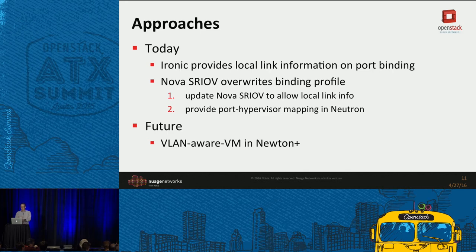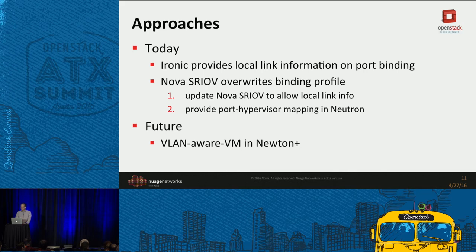The approach we've taken today is to align the SRIOV configuration with the way Ironic does things. Ironic provides local link information on the port binding, whereas SRIOV doesn't — if you try to provide local link information on the binding profile, the SRIOV driver overwrites it with its PCI information. Two approaches: one is to update the Nova SRIOV to allow local link information, which would require patching Nova. The cheaper and easier approach is within the plugin to do the port-to-hypervisor mapping in Neutron, so you can get that back even though it's not being passed between Nova and Neutron. That's what we have today.